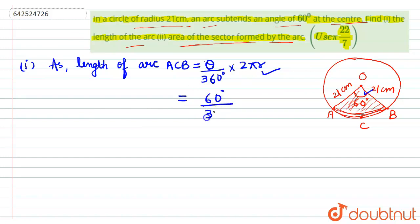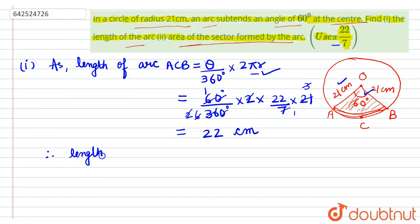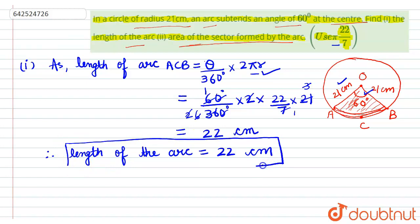Substituting the values: theta is 60 degrees, denominator is 360 degrees, pi is 22/7, and r is 21 centimeters. Canceling the zeros, 6 goes into 6, 7 goes into 21 three times, that 3 cancels with 6 two times, and the 2s cancel out. We are left with 22 centimeters. So the length of the arc is 22 centimeters.